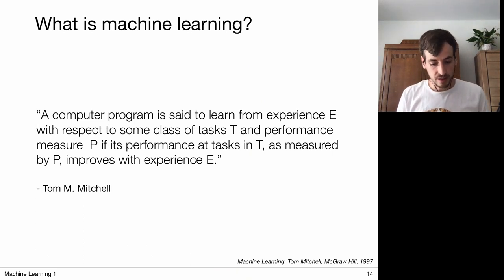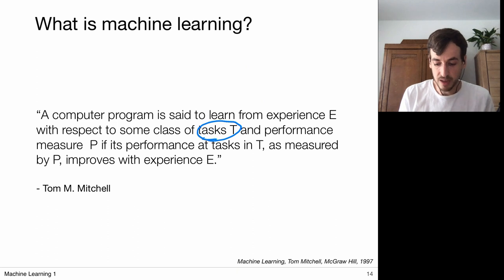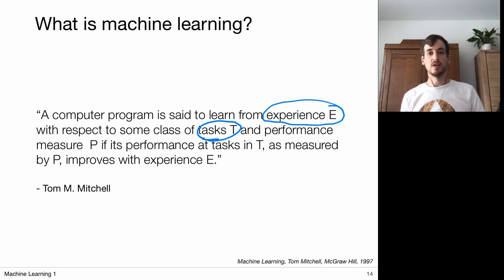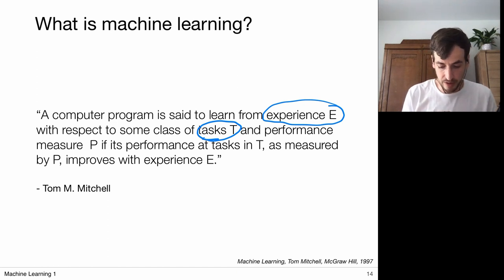So what we did in this short lecture is go through a definition of machine learning and broke it down into three components. The main component is a task T — what we designed the algorithm to do. Then based on experience E, we improve the performance of doing this task, and how well it performs is quantified by some performance measure P.